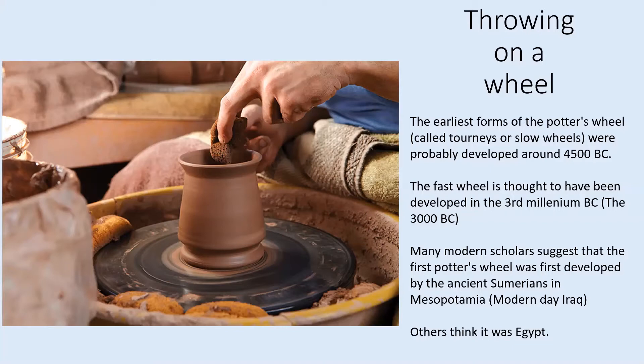The fast wheel — more akin to what we use today, perhaps powered by somebody's foot — would have been developed in the third millennium BC. Many people think it was developed in ancient Sumeria and Mesopotamia, which is actually Iraq. Other folks think it might have been Egypt. Either way, throwing on a wheel is a very popular way of making pottery and used to be the main means of manufacture, but things have moved on.